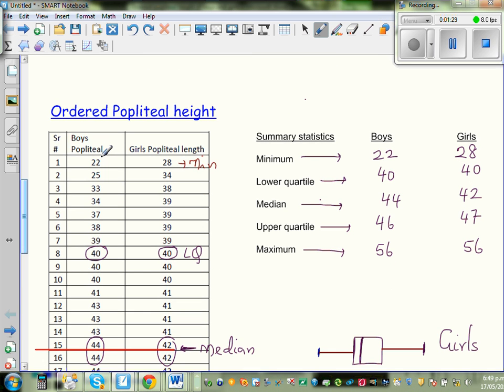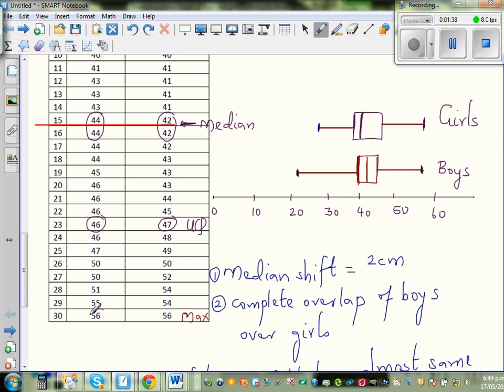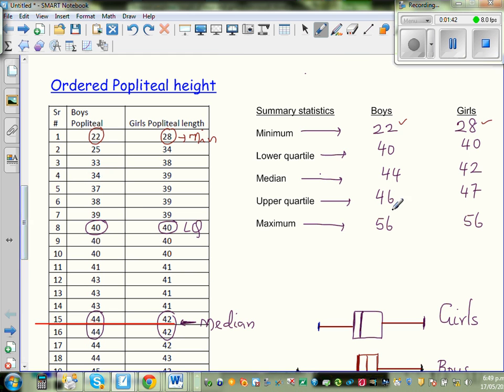So obviously this is your minimum for boys and girls. This is 22 and 28. So let's go to maximum. So maximum is 56. They are the same. So that is 56.